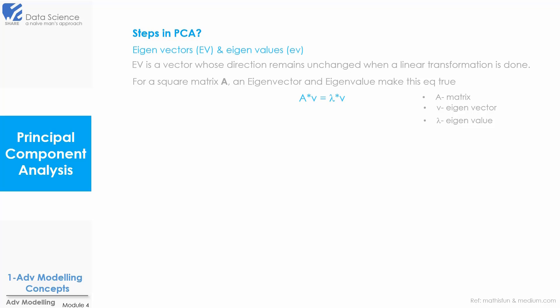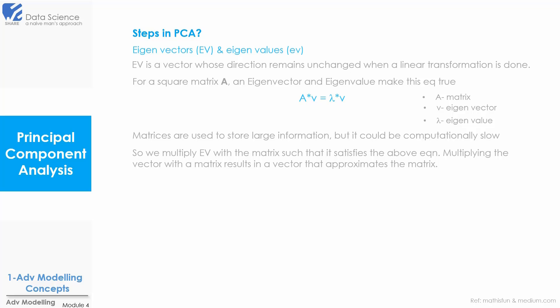But the question is why do we use eigenvectors? As we know that matrices are used to store large information, but it could be computationally slow. So what we do is we multiply eigenvectors with matrix such that it satisfies the above equation. Multiplying the vector with a matrix results in a vector that approximates the matrix. The idea of eigenvector here is that we get a vector which is computationally efficient and we also are able to approximate the whole matrix.